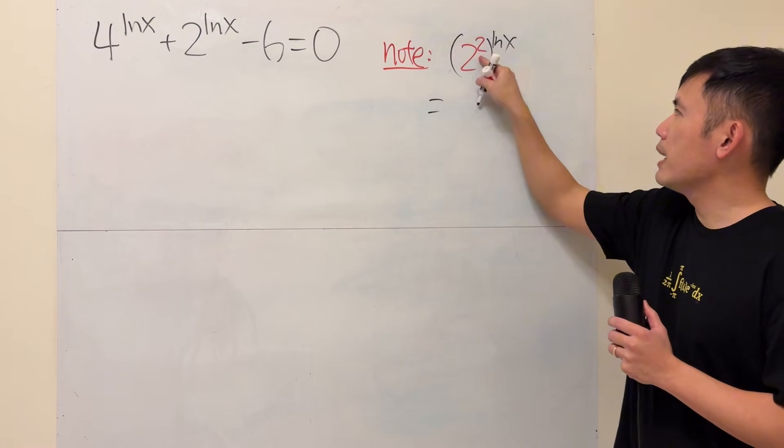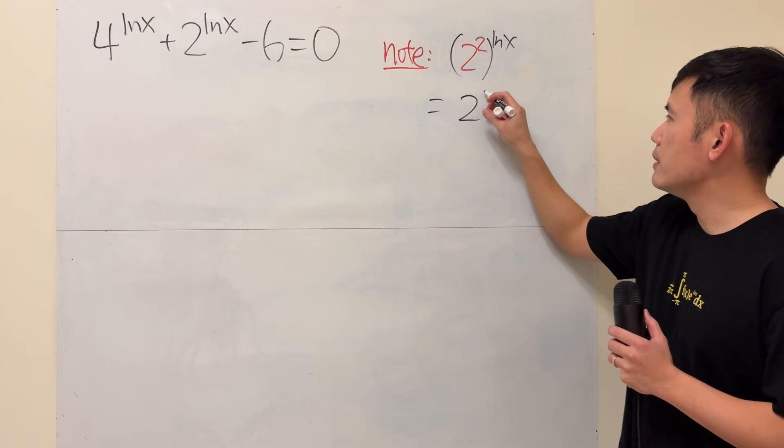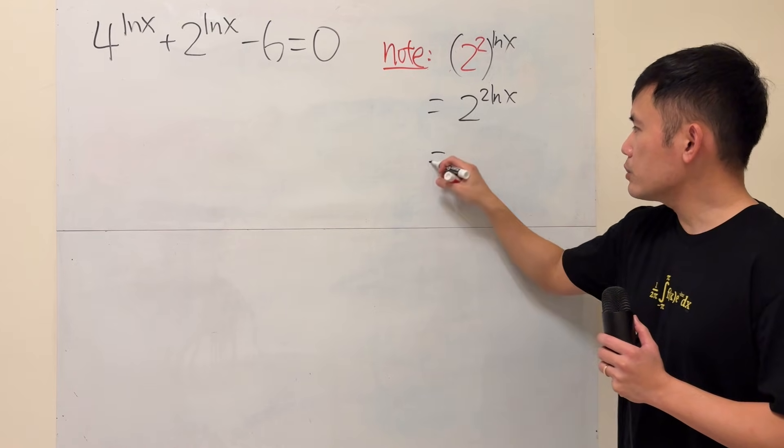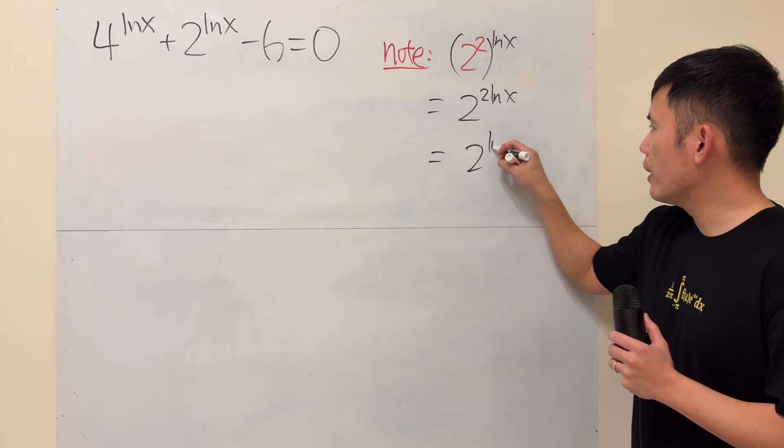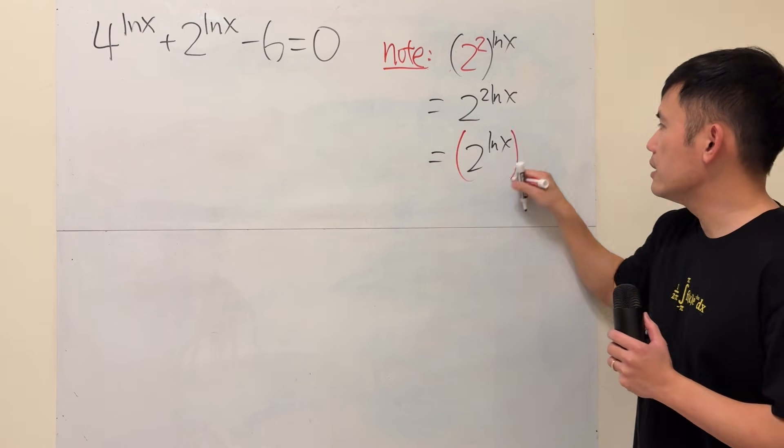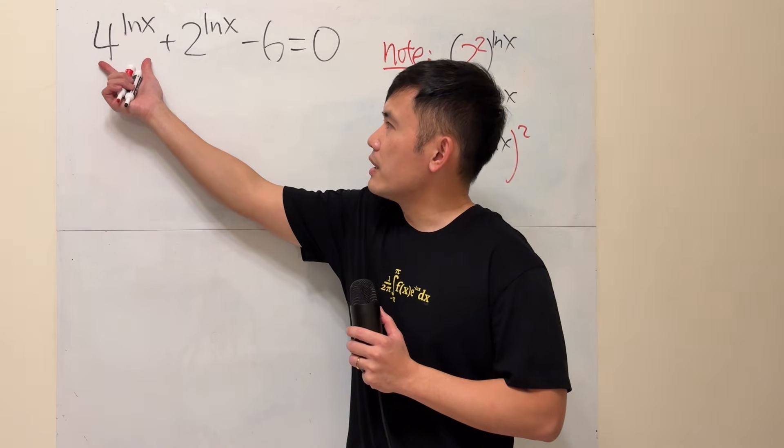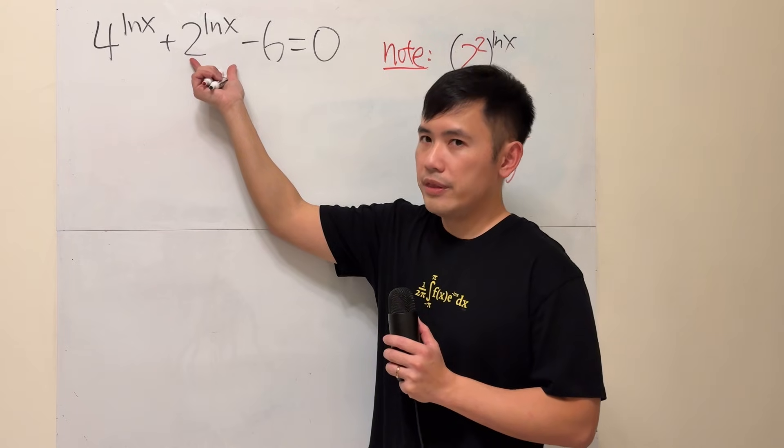we can multiply the exponents, and that will be the same as 2 to the 2 ln x power. And you can actually look at this as 2 to the ln x power, and then square. In another word,